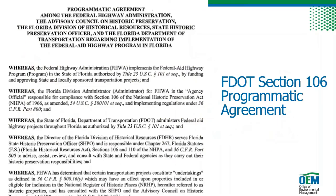The FDOT process for compliance is implemented through the Section 106 PA, which contains three programmatic processes. Stipulation 7 is the normal four-step Section 106 process just described, for major transportation undertakings with standard involvements with cultural resources. We also have two programmatic processes for projects with only minor involvements. If your project qualifies, you can meet compliance standards through minimal background research and no — or very little — field survey. Relevant information is recorded on forms emailed to DHR, and if they don't object within 30 days, your project is compliant and you can move on.